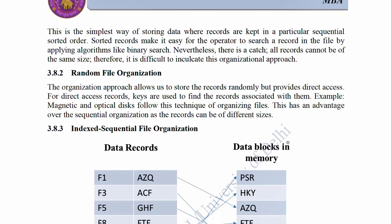3.8.2 Random File Organization: This organization approach allows us to store the records randomly but provides direct access. For direct access records, keys are used to find records associated with them. Example: magnetic and optical discs follow this technique for organizing files. This has an advantage over the sequential organization as the records can be of different sizes.